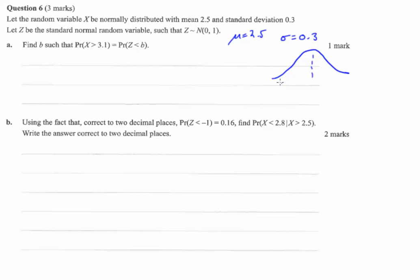If our mean is there, we know that being greater than 3.1, the mean is 2.5, being greater than 3.1 will be this area here. And we're looking for the b value that will give the same area on the other side of the bell curve.